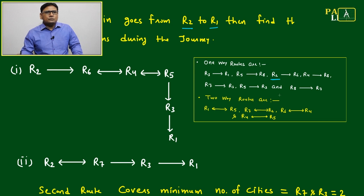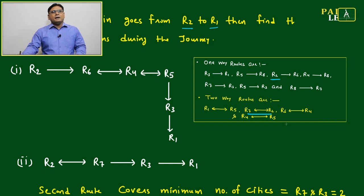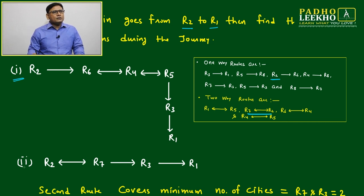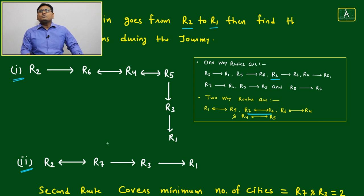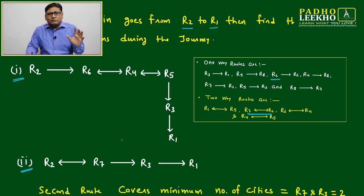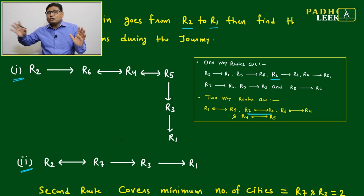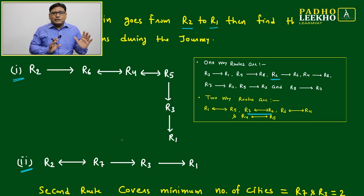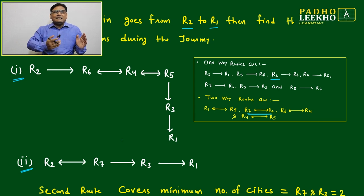From R2, there are two possibilities: R2 to R6 (one-way) and R2 to R7 (two-way, shown by double arrow). So if starting from R2, you can either go to R6 or R7. The key condition is not just going to the next station — it must be a route through which you can actually reach the destination R1.